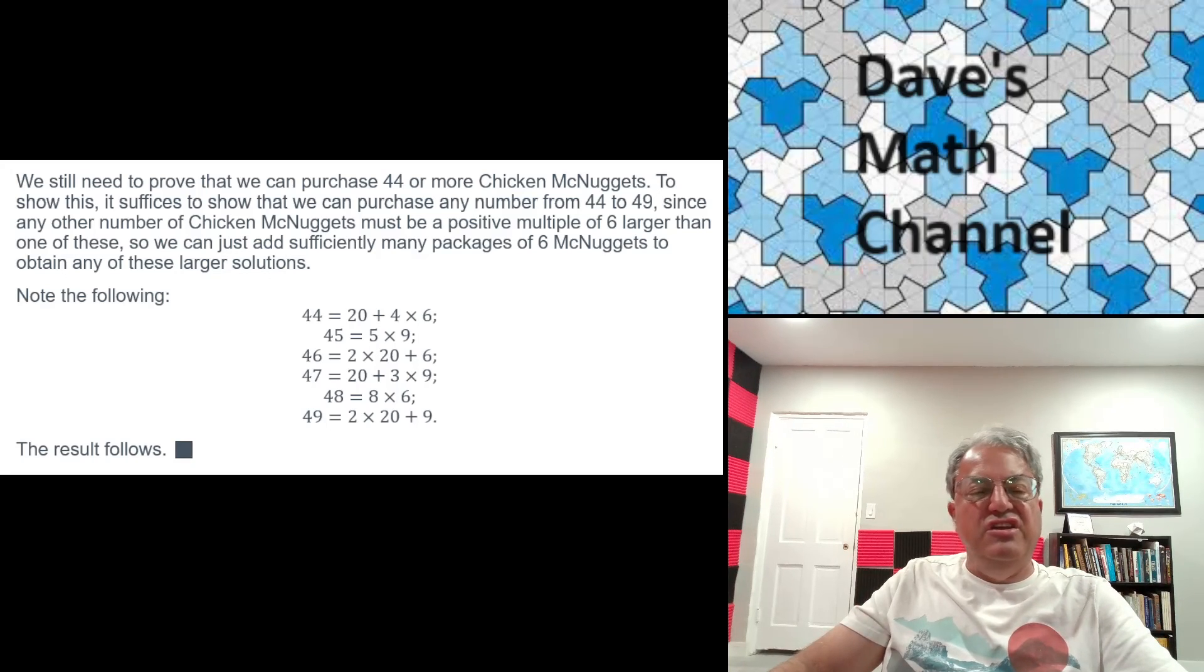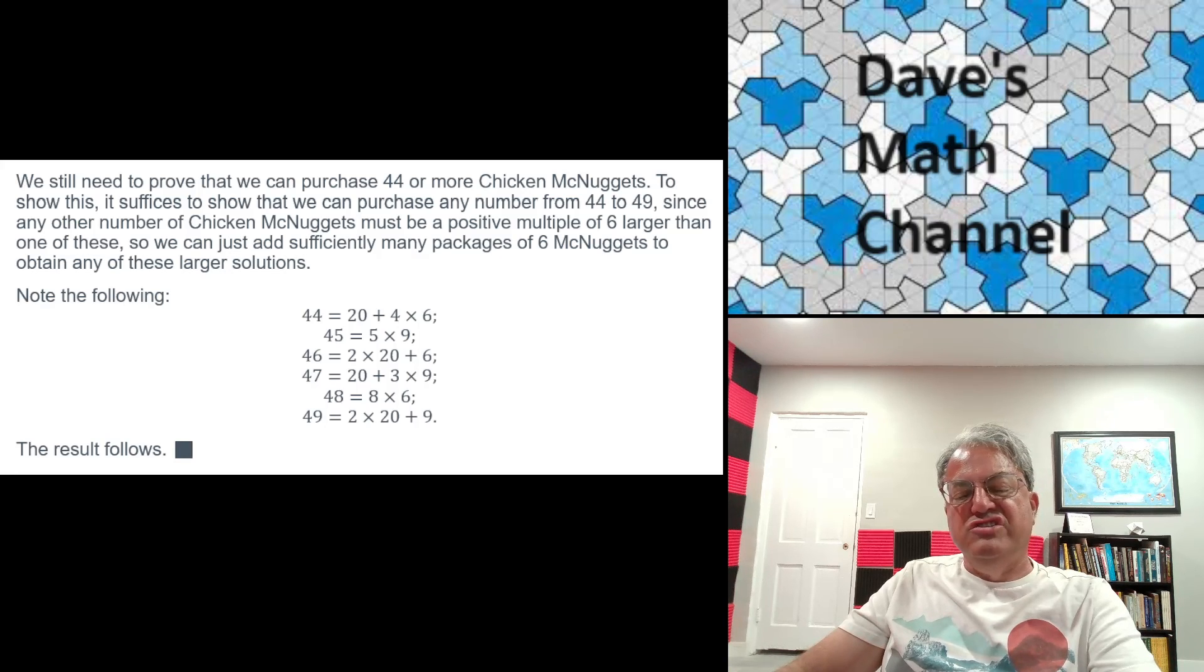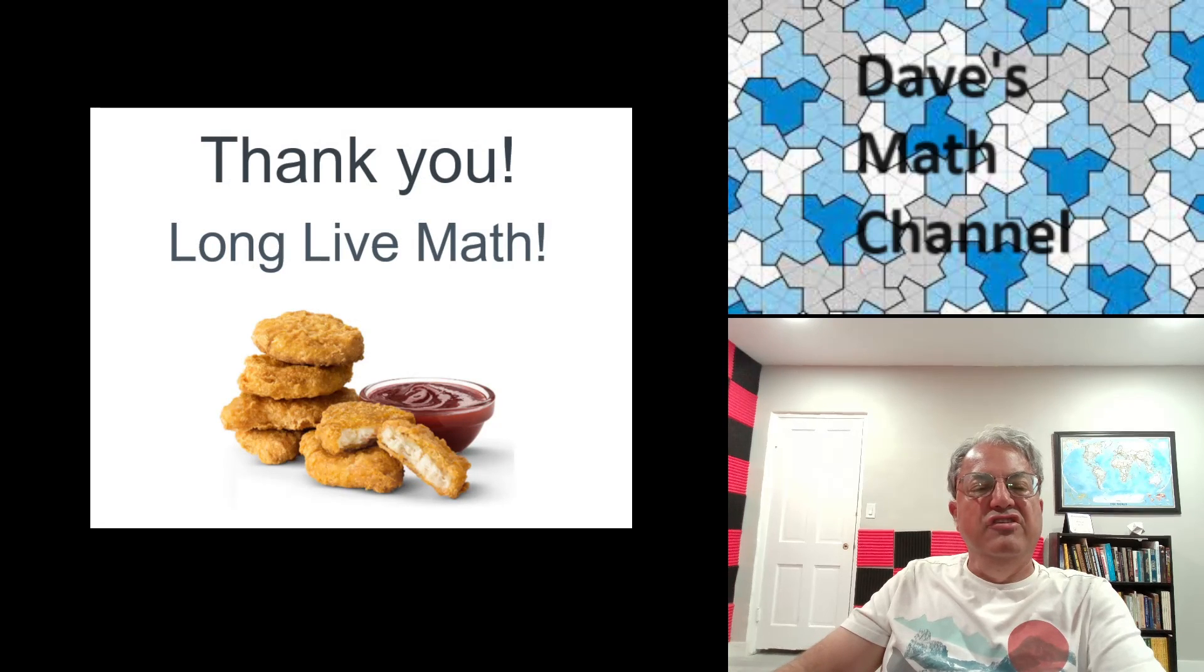We're done. So we can purchase any number, 44 or larger, but we can't purchase 43. And of course, there's some smaller numbers we can't purchase either. I think the complete Chicken McNugget theorem says exactly which numbers of Chicken McNuggets you can and can't purchase. But I just did the largest one because that's the one most people are most interested in. So anyway, that's the Chicken McNugget problem, the Chicken McNugget theorem, and its truth. I hope you enjoyed it. Thank you for watching. Long live math. And I guess long live McDonald's and Chicken McNuggets. And I'll see you guys next time. Bye.